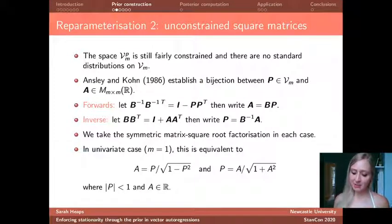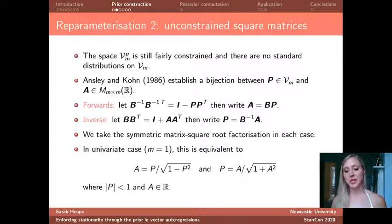So we're now working in a space which is less constrained, but still this is a fairly constrained space. And it's certainly the case that there are no standard distributions on this set of matrices with singular values less than one. Fortunately, Ansley and Kohn, again in this 1986 paper, established a bijection between P, so this partial autocorrelation matrix with singular values less than one, and the space of unconstrained square matrices. And the kind of full details of the forward and inverse mapping are indicated here, but I think it's more intuitive to look at the univariate case.